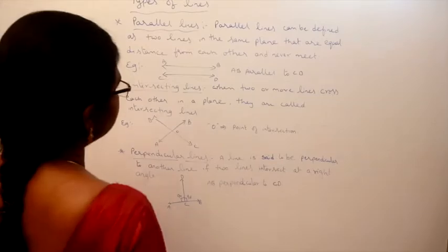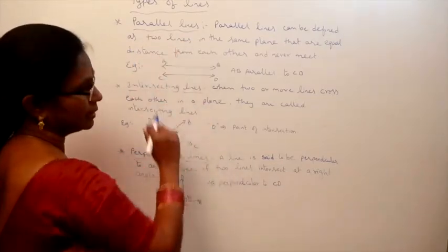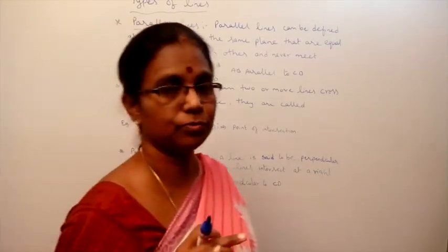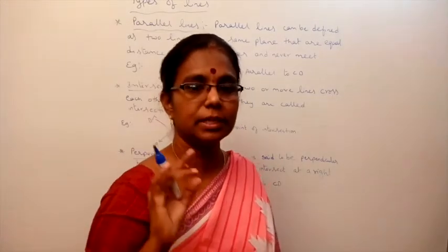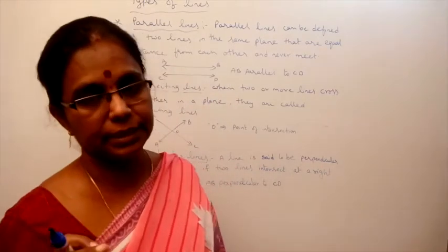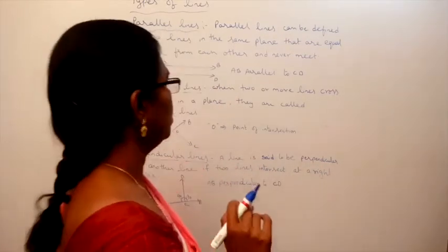Next topic: types of lines. How many types of lines are there? Three types of lines — parallel lines, intersecting lines, and perpendicular lines.